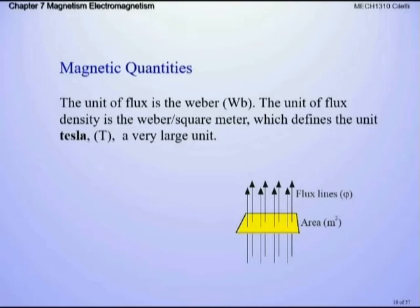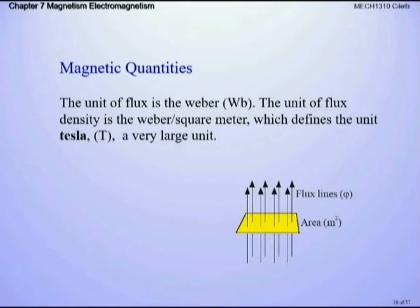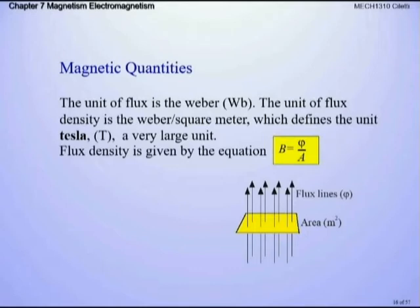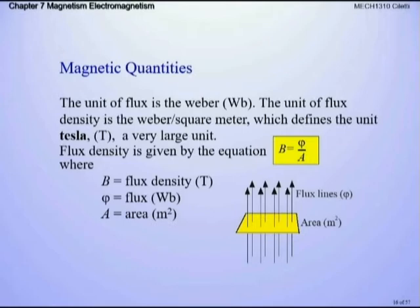For magnetic flux quantities, we talk about two units: a Weber and a Tesla — Tesla being much larger. Flux lines are represented by the Greek symbol phi (φ). The flux lines are based on the area of the magnet, measured in meters squared. We calculate flux density: beta (B) = phi (φ) / area. One Weber is 10⁸ lines of flux; normally we use microwebers, which represent 100 lines of flux.